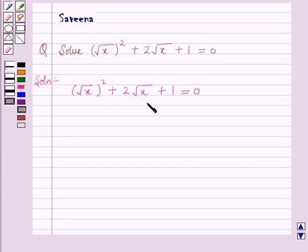For solving this equation, we will put √x = t. Putting √x = t, we get t² + 2t + 1 = 0.